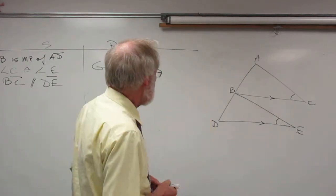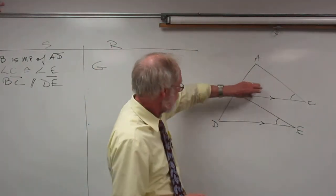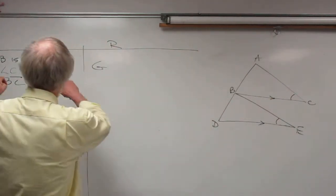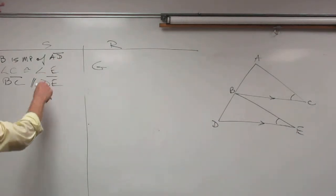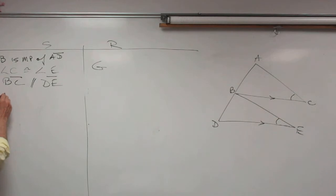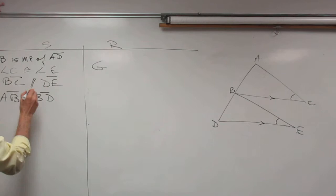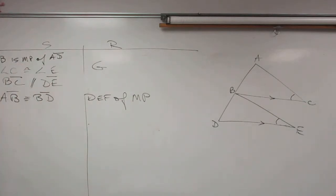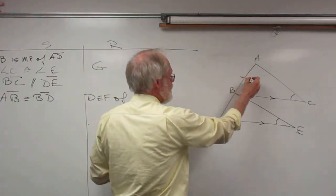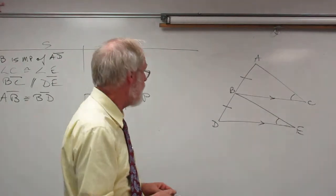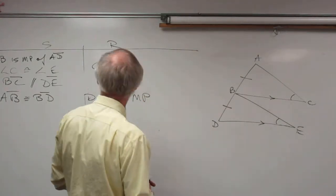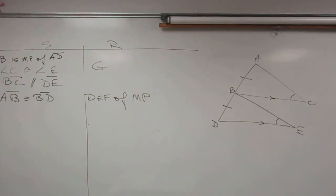We're trying to prove this triangle congruent to this one. We already have an angle. Using the midpoint given: AB is congruent to BD by the definition of midpoint. Now we have an angle and a side, so we're making some progress.